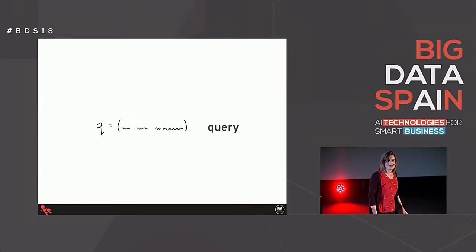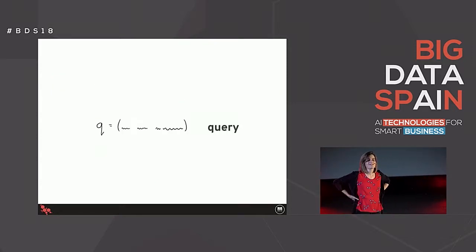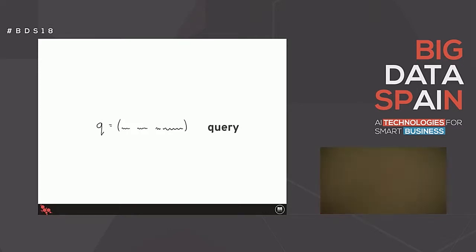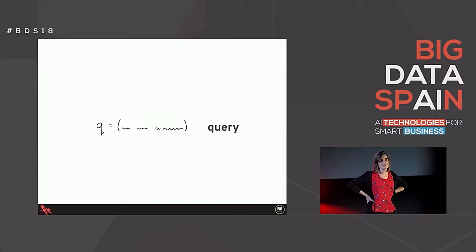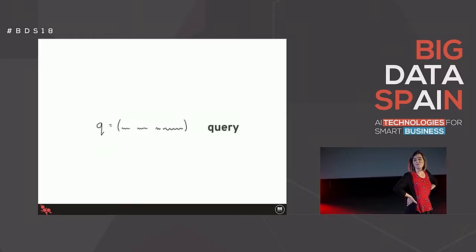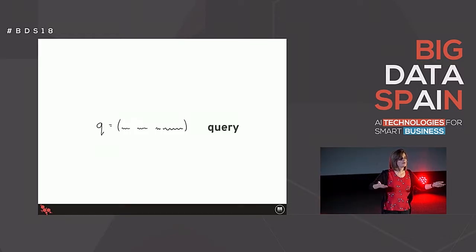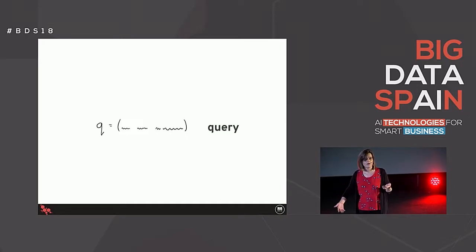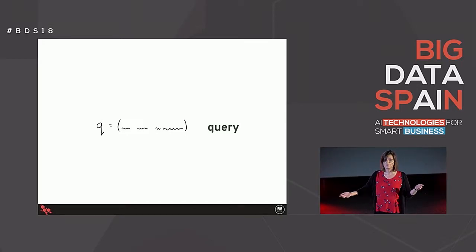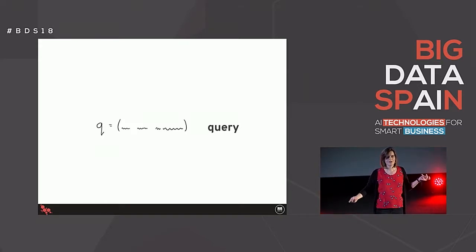Let's set up the problem at hand. The first thing we're starting with is a query. When I say a query, I'm thinking text search - this might be something like a phrase like 'neural networks', or an explicit question like 'how do you implement neural networks in Python?' In the movie search case, it could be something like 'Christmas films', or something more specific like 'Christmas films starring Hugh Grant'.